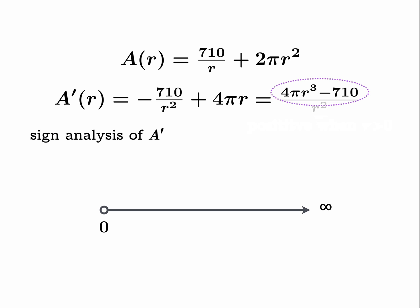That means we can ignore r squared for the purposes of the sign analysis. In other words, it's enough to analyze 4 pi r cubed minus 710. So let's put back the rest of our graph here. This is what a simple cubic looks like—this would be the graph of 4 pi r cubed—and if you subtract 710 from that, we're going to shift it down. So this is our quick sketch of the numerator function in our formula for A prime.